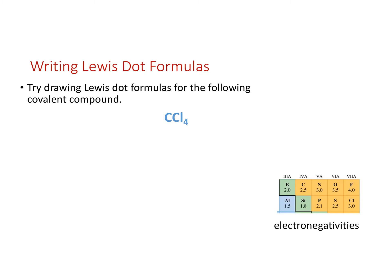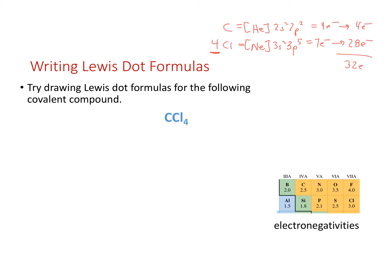Here's one more: carbon tetrachloride. Carbon is helium 2s² 2p² for four valence electrons. Chlorine is neon 3s² 3p⁵ for seven valence electrons per chlorine — I have four chlorines, so four times seven is 28 electrons from chlorine, plus four from carbon, for 32 total electrons to assign in carbon tetrachloride.